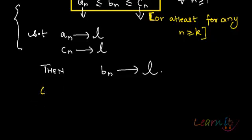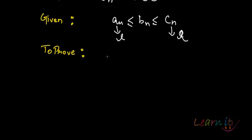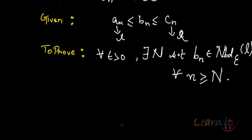So all this is given to us and what we have to prove is that b_n converges to L. Let me write down what is given and what we have to prove. Given: a_n, b_n, c_n with the ordering relationship, and a_n converges to L, c_n converges to L. We need to prove that for all epsilon greater than 0, there exists a capital N natural number such that b_n belongs to the epsilon neighborhood of L for all n greater than or equal to capital N.